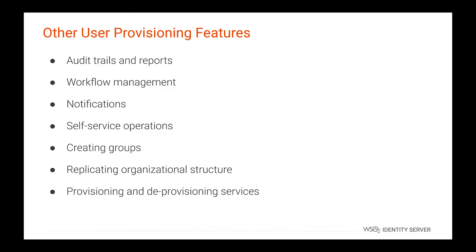Additionally, there are a few more user provisioning features. User provisioning systems keep an audit trail to track all changes, enabling tracing of who changed what, when, and why. They can also generate reports that provide information about user privileges and services, which are useful for security audits. User provisioning systems also enable governing workflows, thereby providing the ability to grant access to the system upon approval. Users can also be notified about changes to their accounts and their privileges.